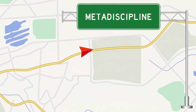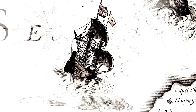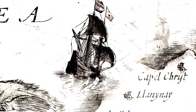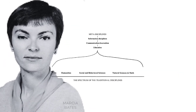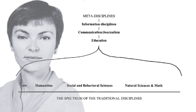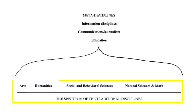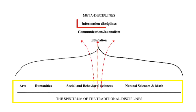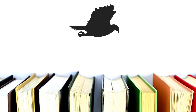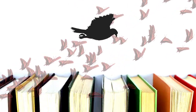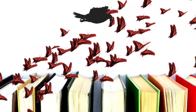Information science is a meta-discipline. Where is information science located on any map or framework of the academic disciplines? According to Marcia Bates, information science is a meta-discipline. She explains that there is a traditional spectrum of the arts and humanities, social and behavioral sciences, and natural sciences and math. Information science operates at one conceptual level higher, alongside education and communications. From this elevated position, we are better able to facilitate the processes of knowledge production, dissemination, and safekeeping.